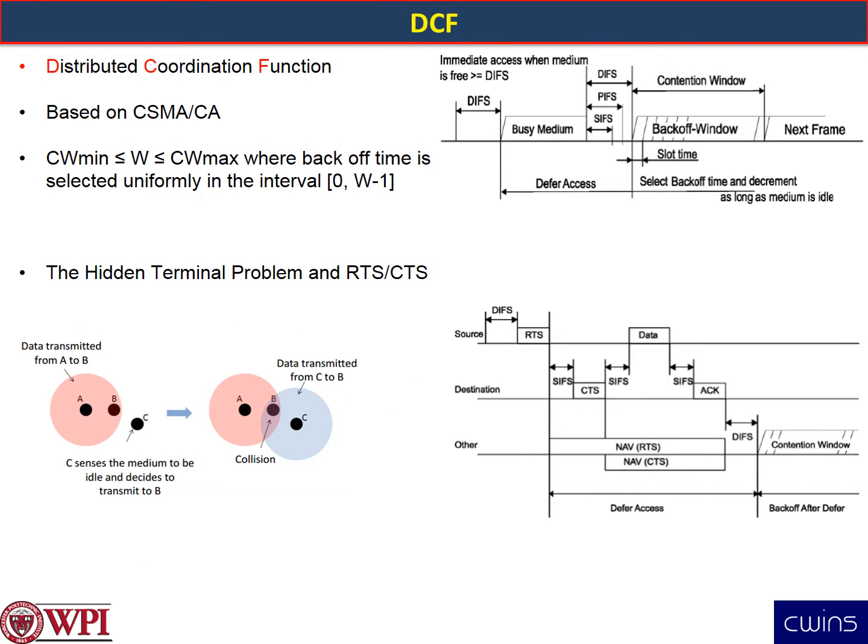DCF stands for the Distributed Coordination Function in the IEEE 802.11 model. It is based on the Carrier Sense Multiple Access method with collision avoidance. The figure on the right shows a summary of that. The DCF has a backoff time counter that is determined by choosing a window size W, limited between a minimum size CW_min and a maximum size CW_max.